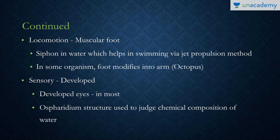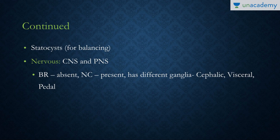Osphradium is the structure which helps in judging the chemical composition of water. The statocyst is a balancing organ. The nervous system consists of CNS and PNS; the brain may be absent but there is no nerve cord. Instead, different ganglia are present: the cephalic ganglia, the visceral ganglia, and the pedal ganglia.